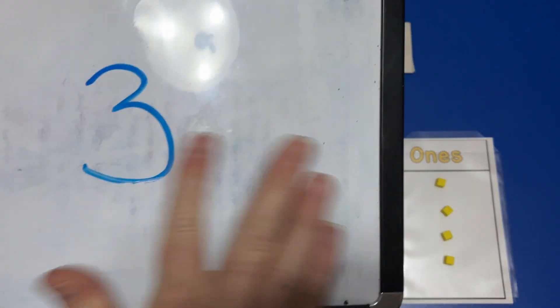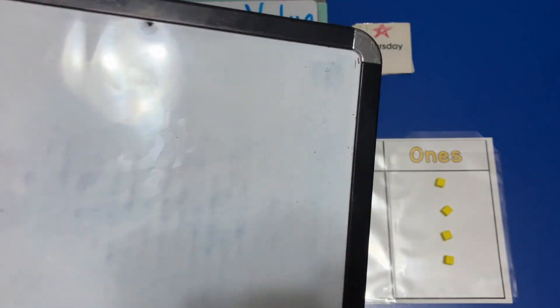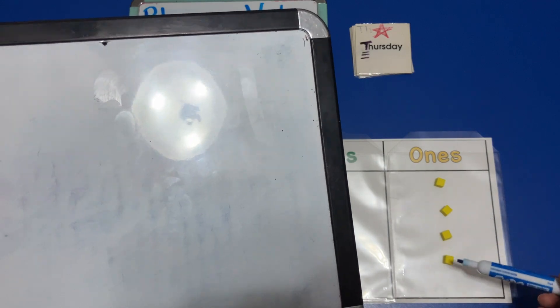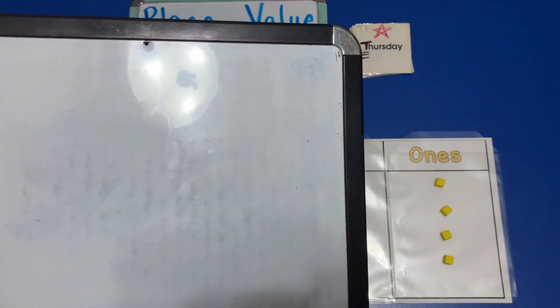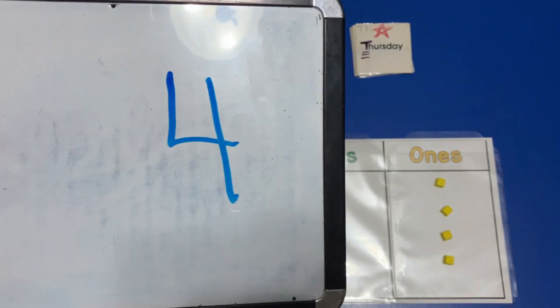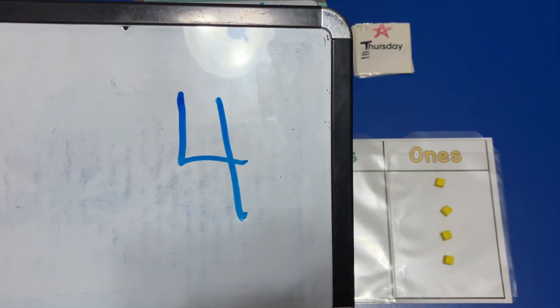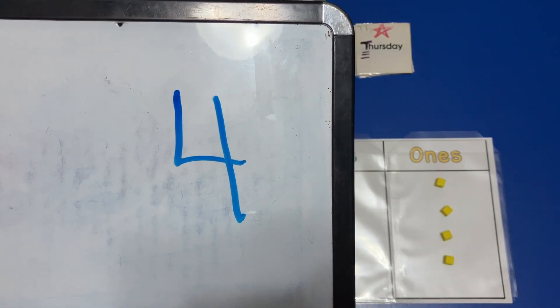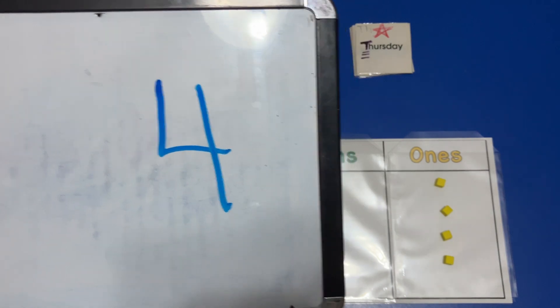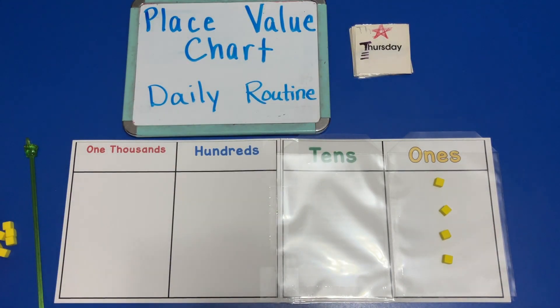And we would say, okay, how many do we have on our place value chart? We have one, two, three, four. So on Thursday we would write down that we have four units — the value on our place value chart is four. Then we would be finished for Thursday.